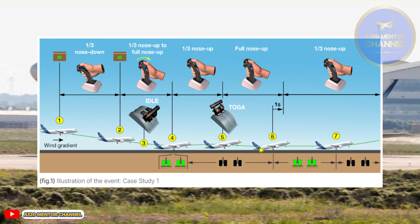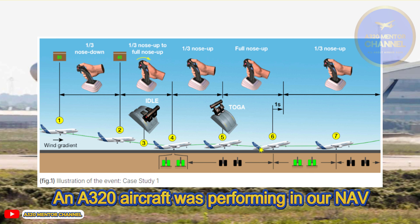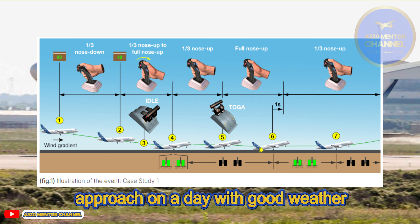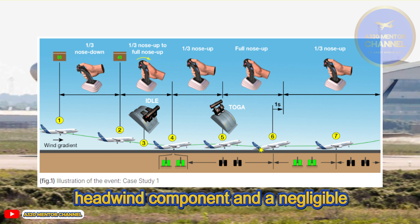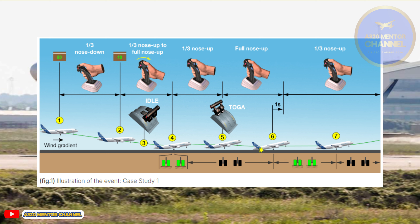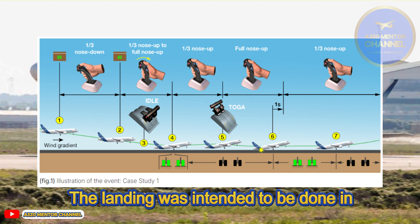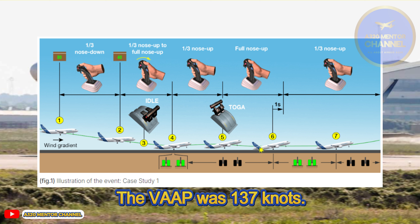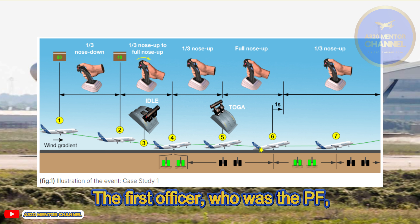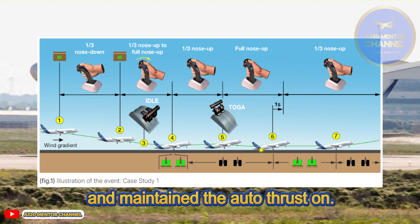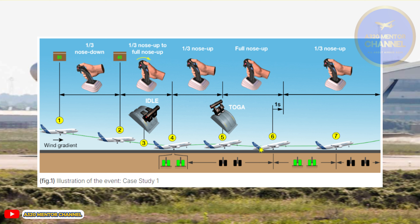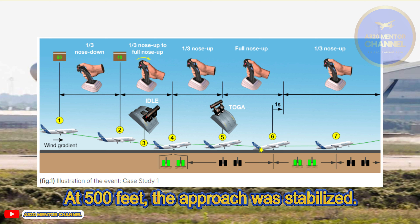Case Study 1 – Event Description. An A320 aircraft was performing an RNAV approach on a day with good weather conditions. The meter indicated wind with a 10-knot headwind component and negligible crosswind. The landing was intended in configuration full; V-app was 137 knots. The first officer, who was the PF, disconnected the autopilot at 930 feet RA and maintained auto thrust on. At 500 feet, the approach was stabilized.